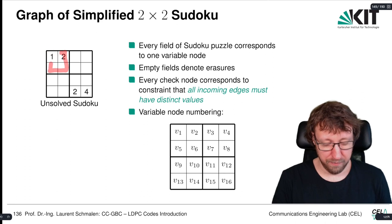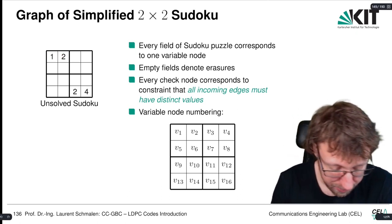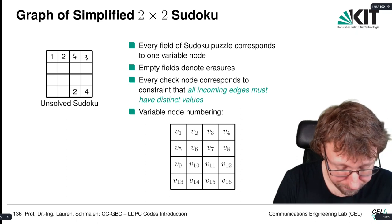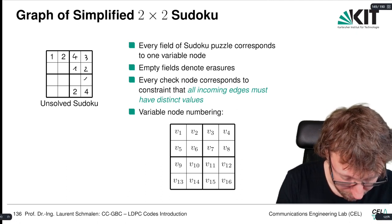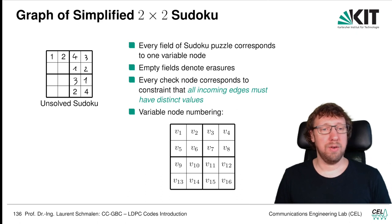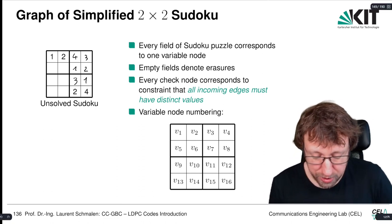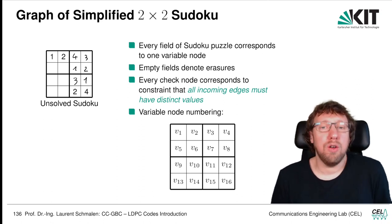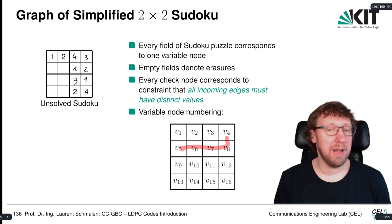We can make an analogy with a simplified 2×2 Sudoku using numbers 1 to 4. We can solve one example: certain cells must be 4 and 3, others must be 1 and 2, and so on. The empty fields denote erasures, and every check node corresponds to a constraint — the constraint that all incoming edges must have distinct values.